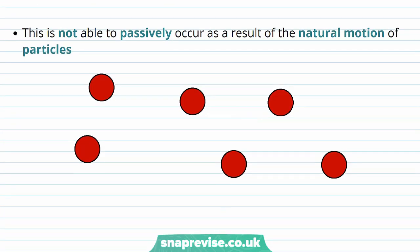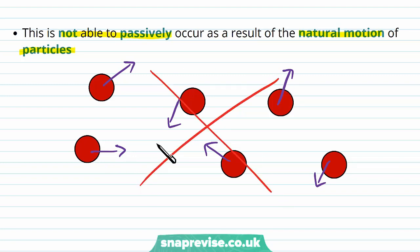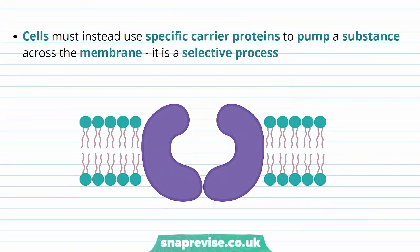This has no way of occurring passively because the natural motion of the particles doesn't favour this. Remember, all particles in air or liquids move randomly, and they collide randomly with each other. So it would never work this way because eventually they only want to take part in normal diffusion down a concentration gradient. Instead, cells use specific carrier proteins to pump a substance across the membrane against its concentration gradient.